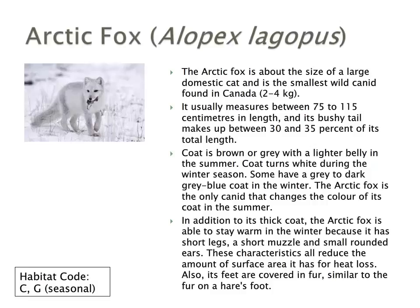The arctic fox is our smallest wild canid, about the size of a domestic cat. It is usually dark or gray in the summer and turns white in the winter season. Its main prey includes small rodents and bird eggs in the summer. Its thick coat and very short legs mean it loses very little heat in the cold winters, helping it stay warm.